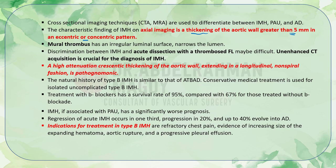To differentiate IMH from a mural thrombus: mural thrombus has an irregular lumen surface and narrows the lumen. Discrimination between IMH and acute dissection with a thrombosed false lumen may be difficult, and the unenhanced CT acquisition is crucial for diagnosis. On unenhanced CT, a high-attenuation crescentic thickening of the aortic wall extending in a longitudinal, non-spiral fashion is pathognomonic for intramural hematoma rather than aortic dissection with a thrombosed false lumen.